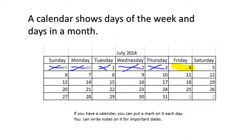A calendar shows days of the week and days in a month. If you have a calendar, you can put a mark on it each day. You can write notes on it for important dates.